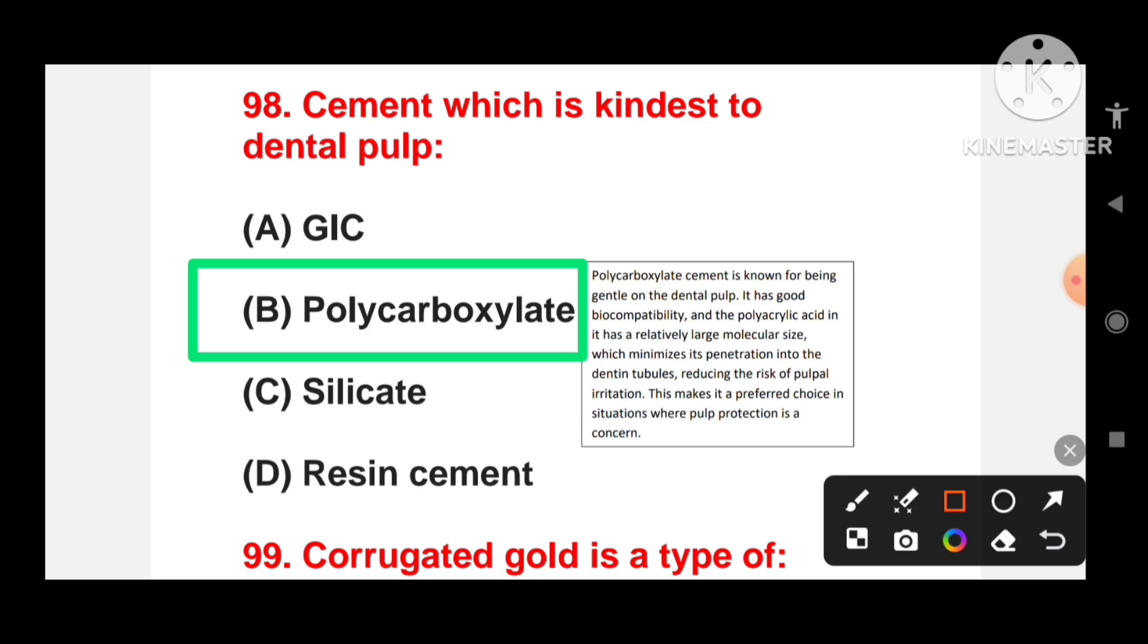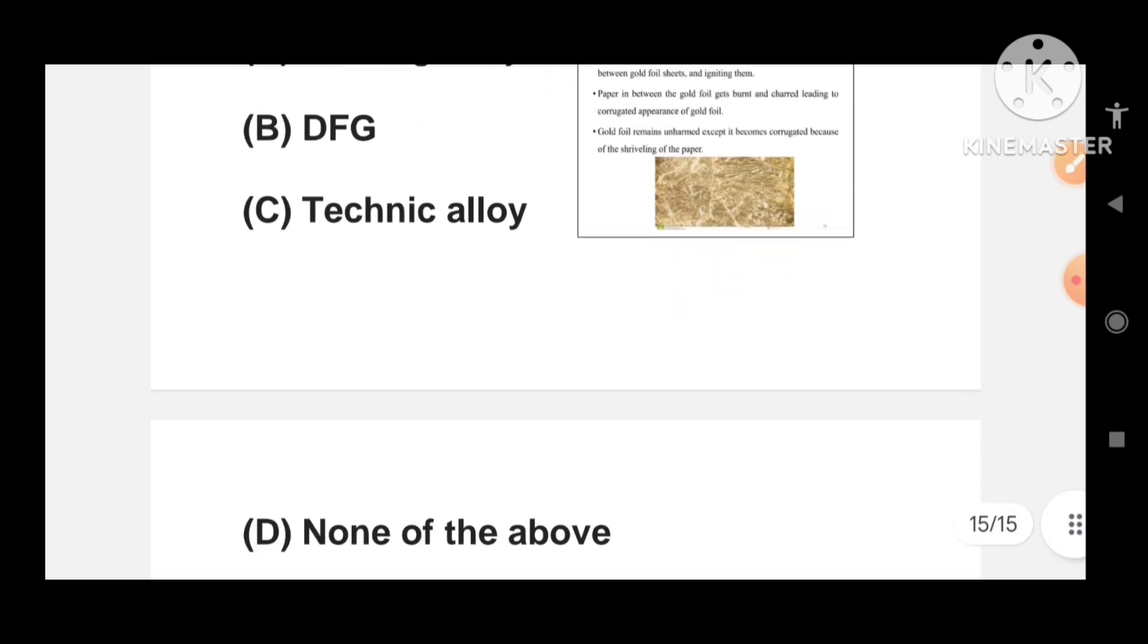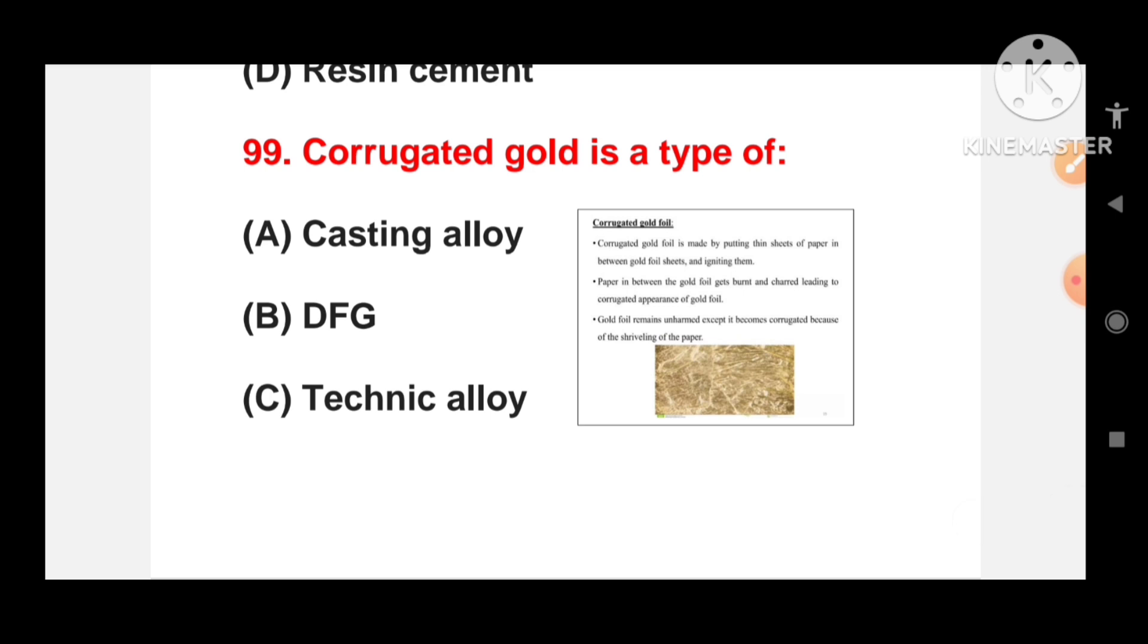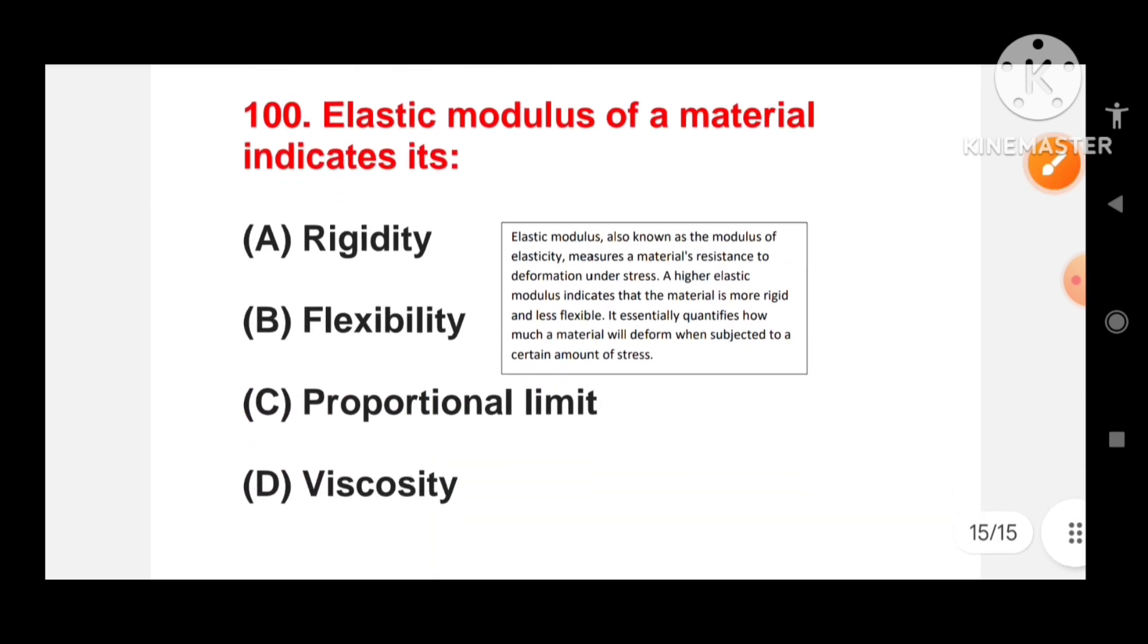Corrugated gold is a type of: casting alloy, direct filling gold, technique alloy or none of the above? Corrugated gold is a type of direct filling gold. It has a type of gold foil in sheets and cylinders. Corrugated gold is formed by placing thin sheets of paper between the gold foil sheets and igniting them. The paper in between the gold foil gets burnt leading to corrugated appearance of gold foil which is because of shriveling of the paper.